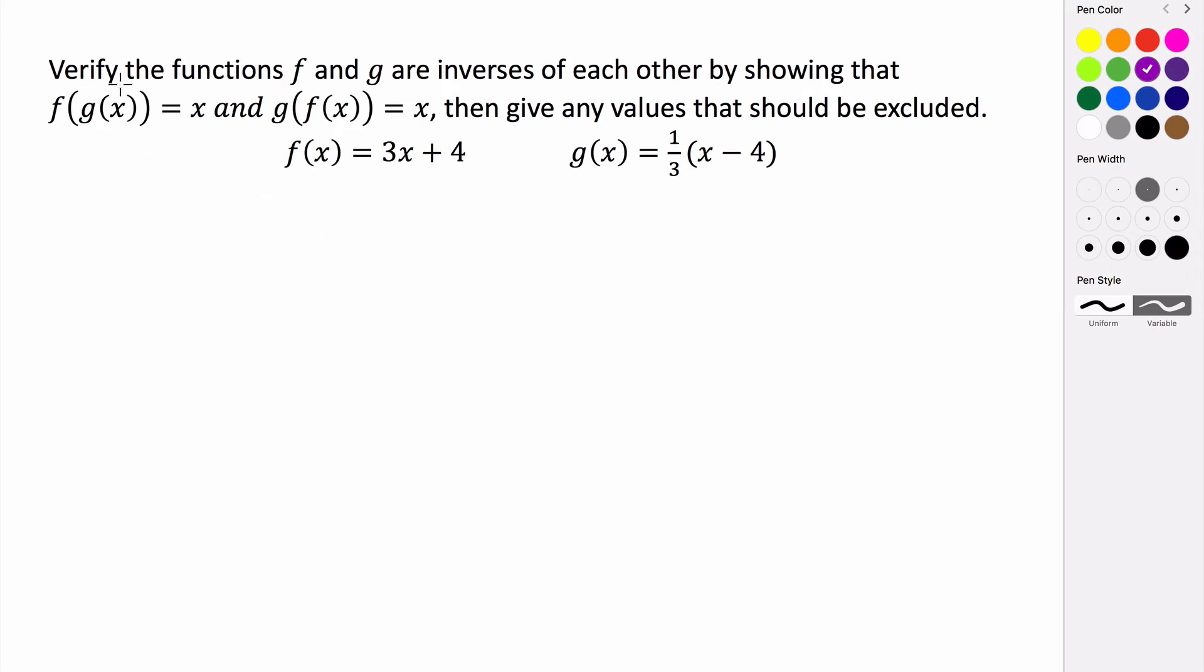In this problem, we're looking to verify that two functions f and g are in fact inverses by showing that when we compose f with g and we compose g with f, they both just equal x. That's a pretty interesting thing about inverses: when you compose a function with its inverse, you just get x as a result. You get whatever the argument is.